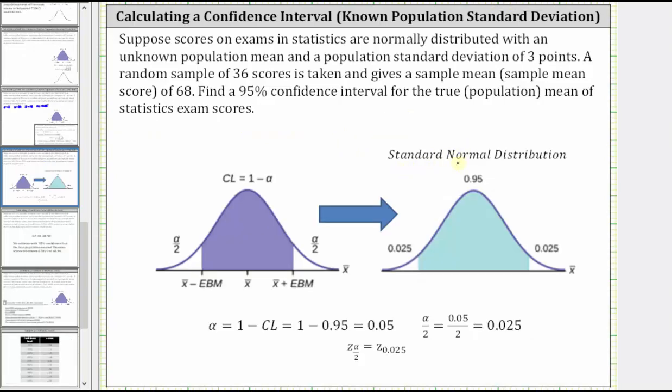If we take a look at the interval under the standard normal distribution that corresponds to the confidence interval, the area under the curve must be equal to 0.95, the confidence level. And then from here, remember alpha is equal to one minus the confidence level, which gives us alpha equals 0.05.